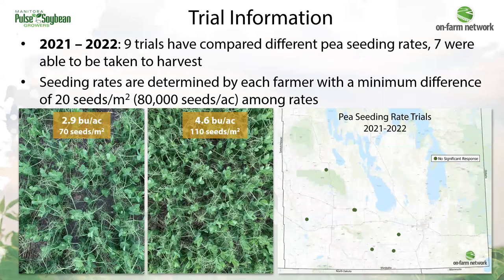Over the last two years, nine trials have been established and seven were taken to harvest. We did lose two trials to drought and hail. Within these trials, seeding rates are determined by the farmer, with the goal of having a minimum difference of 20 seeds per meter squared, or 80,000 seeds per acre, among the seeding rates.